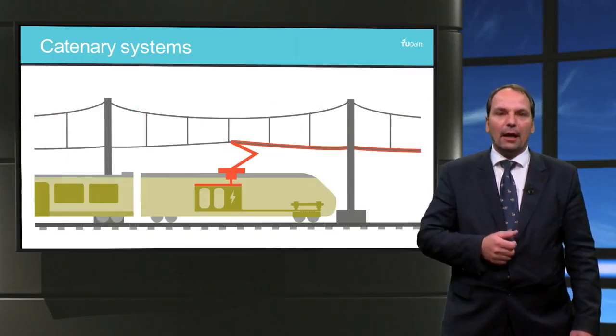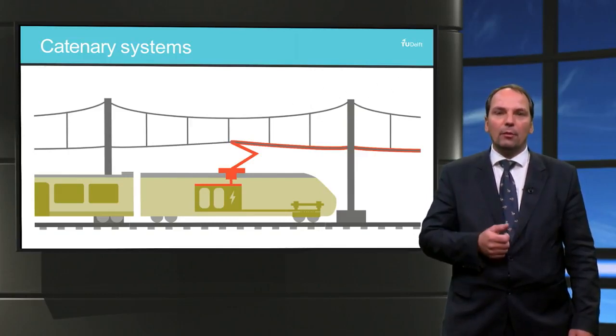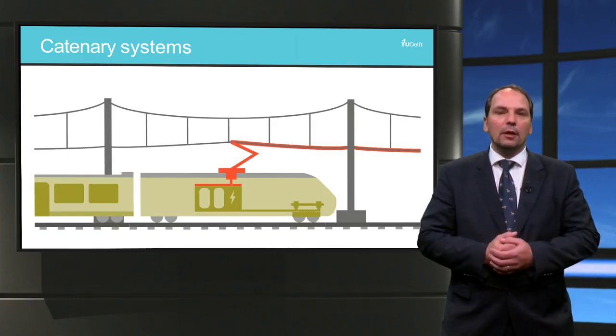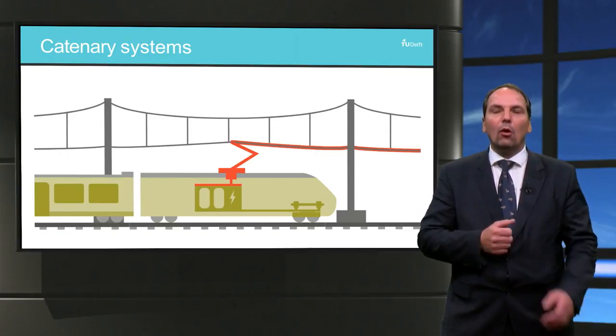The catenary system and the pantograph are designed to guarantee a steady flow of electricity into the traction motors of the train. The design procedure should consider the speed and voltage of the train, among other factors.